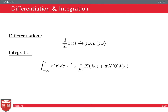Another property is differentiation and integration. In the differentiation property, d/dt of x(t) in the Fourier domain becomes multiplication by j*omega. This is helpful when finding the transfer function of an LTI system defined by a differential equation. Similarly, integrating x(tau) from minus infinity to t gives (1 / j*omega) * X(j*omega) plus some initial condition in the Fourier domain.